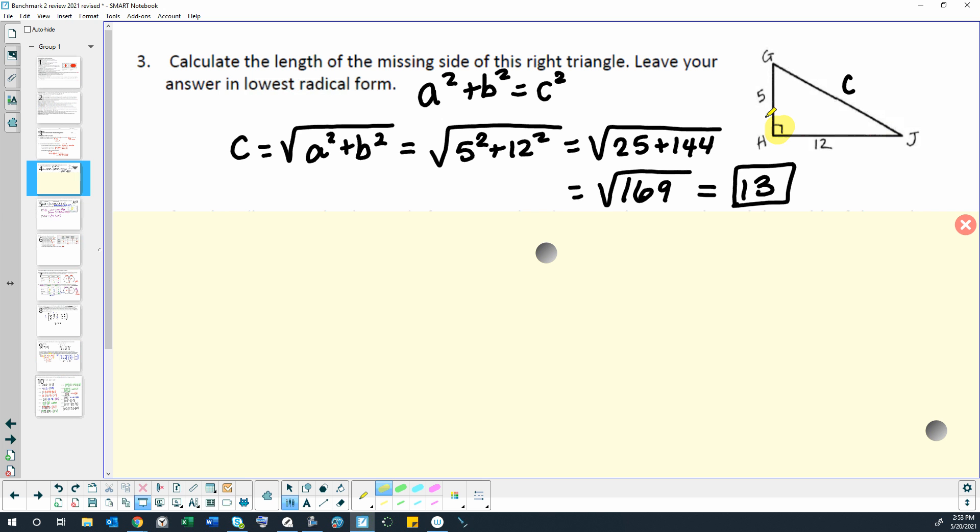Anytime we have a right triangle, we can use Pythagorean theorem, which is this formula right here: A squared plus B squared equals C squared. The way we use it is that the legs of the triangle, which are next to the right angle and shorter, go in for A and B. It doesn't matter which one is which. Side C, the hypotenuse of the triangle, is the longest side.